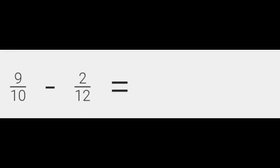I'm going to show you another example of how to solve an addition or subtraction problem with fractions that have different denominators but they're not related to each other. So here's a subtraction problem: we've got nine-tenths take away two-twelfths. We've got different denominators and we know there's nothing I can do to 10 — I can't multiply 10 by anything to make 12, and I can't do anything to 12 to turn it into 10.